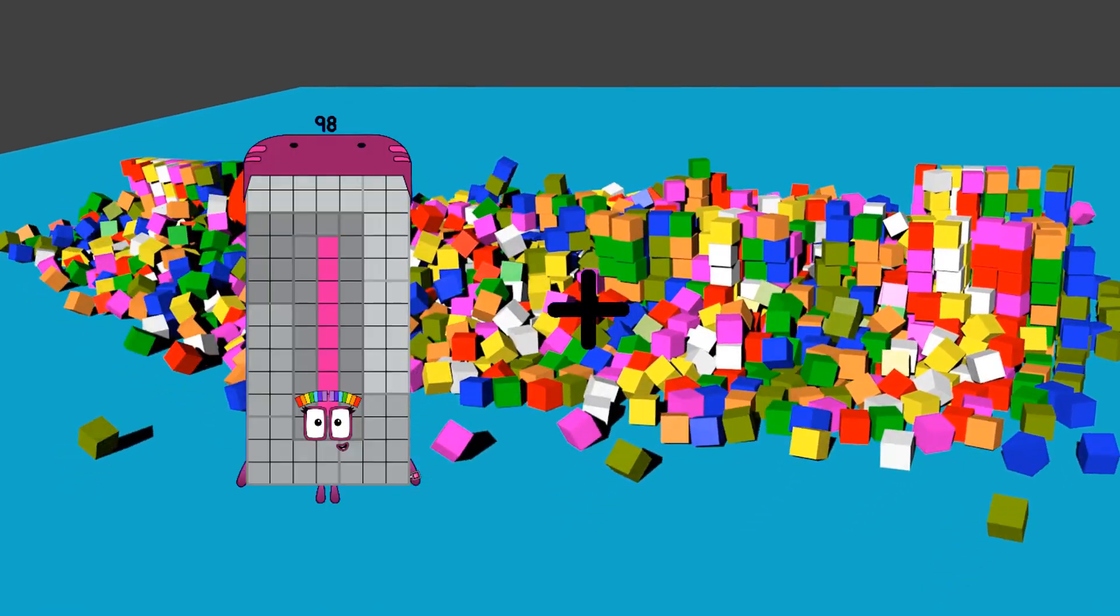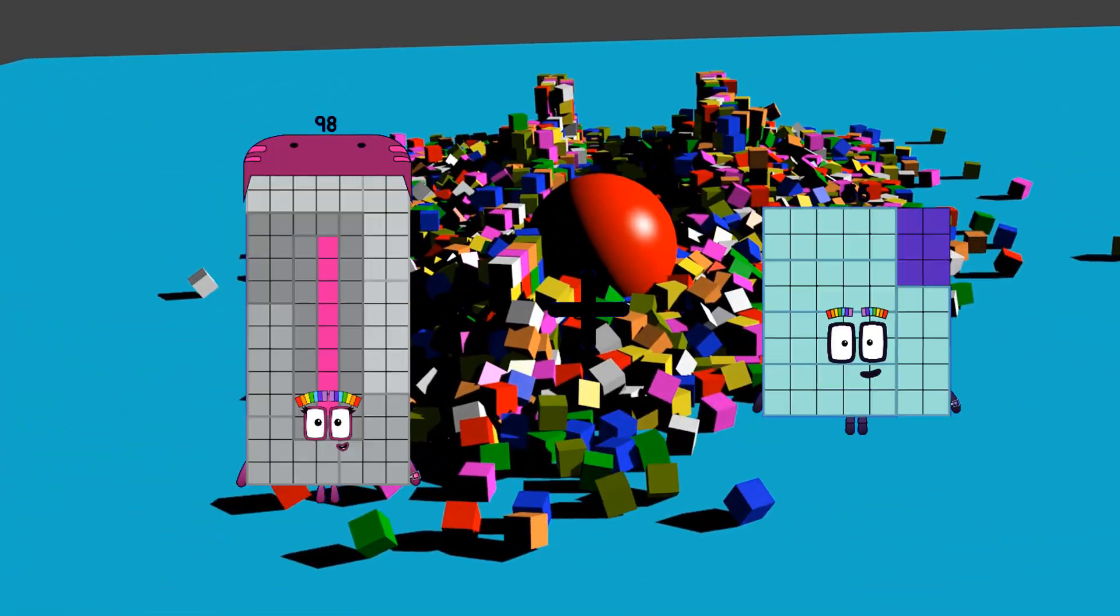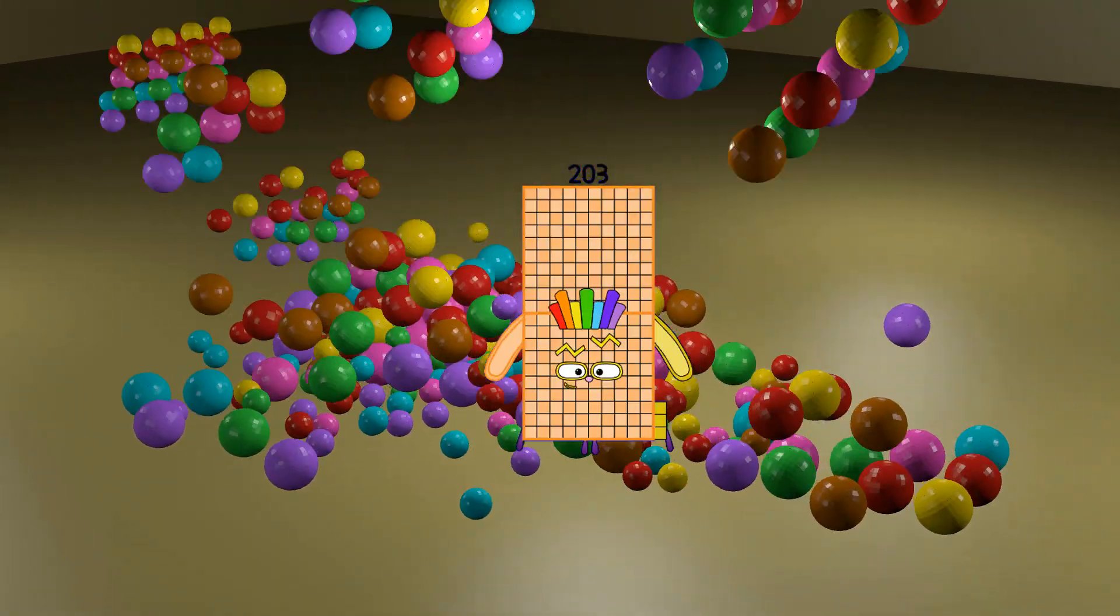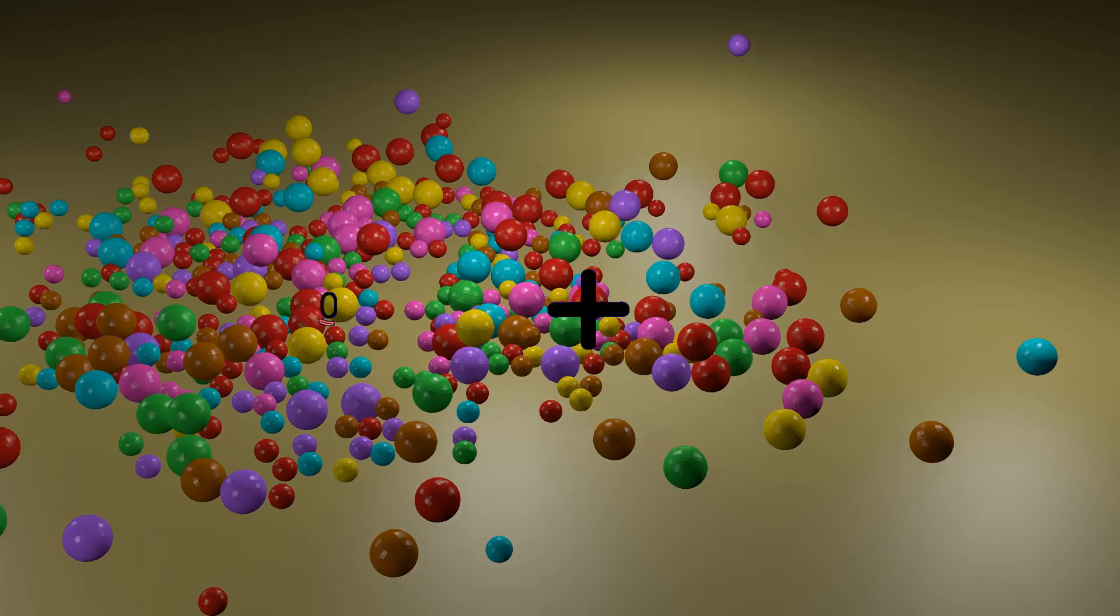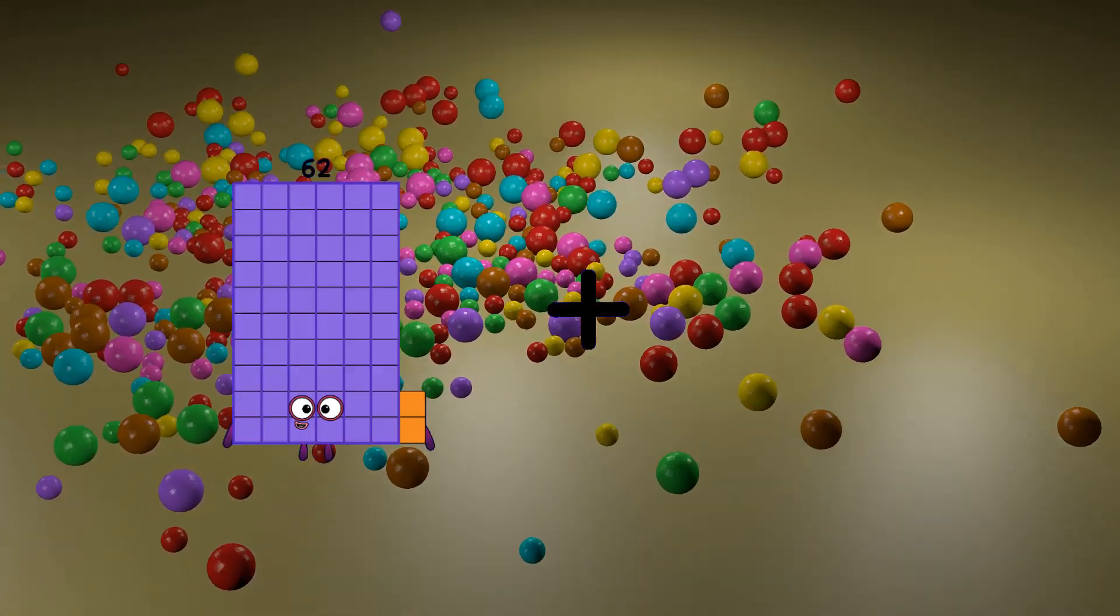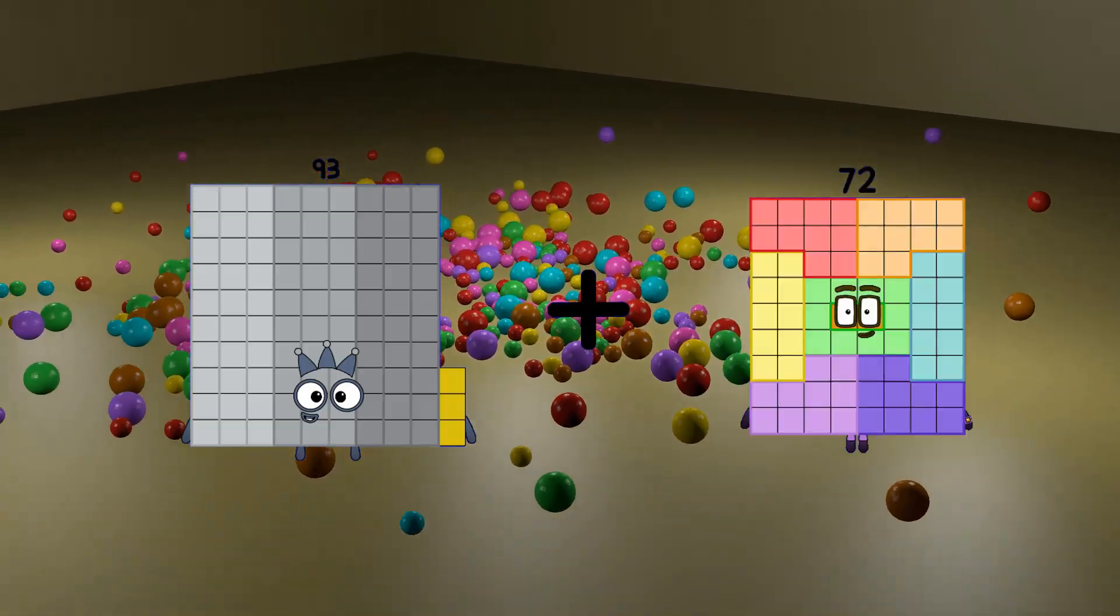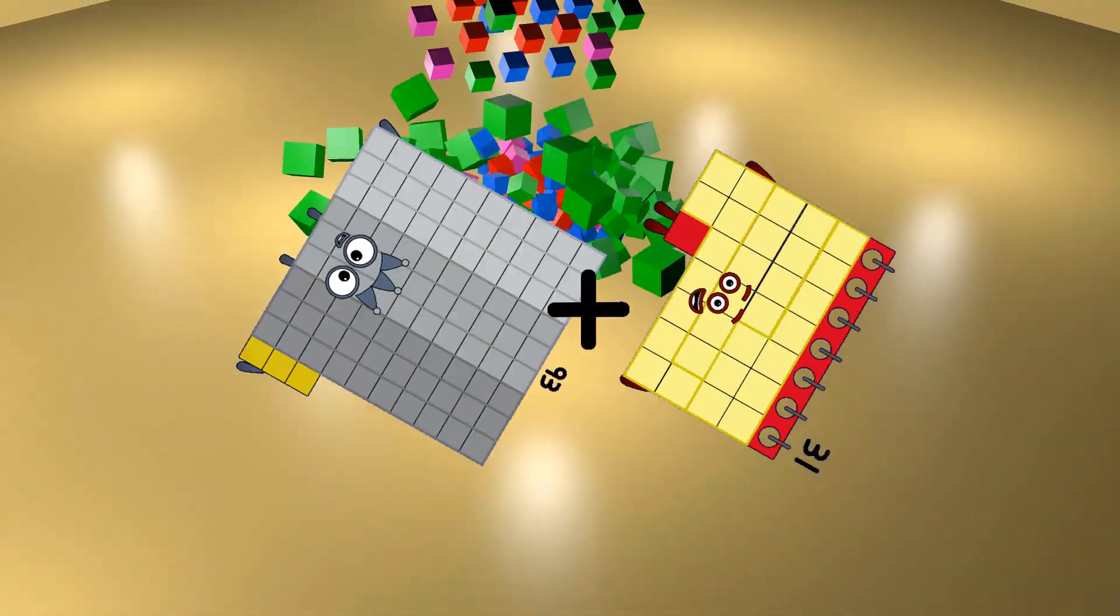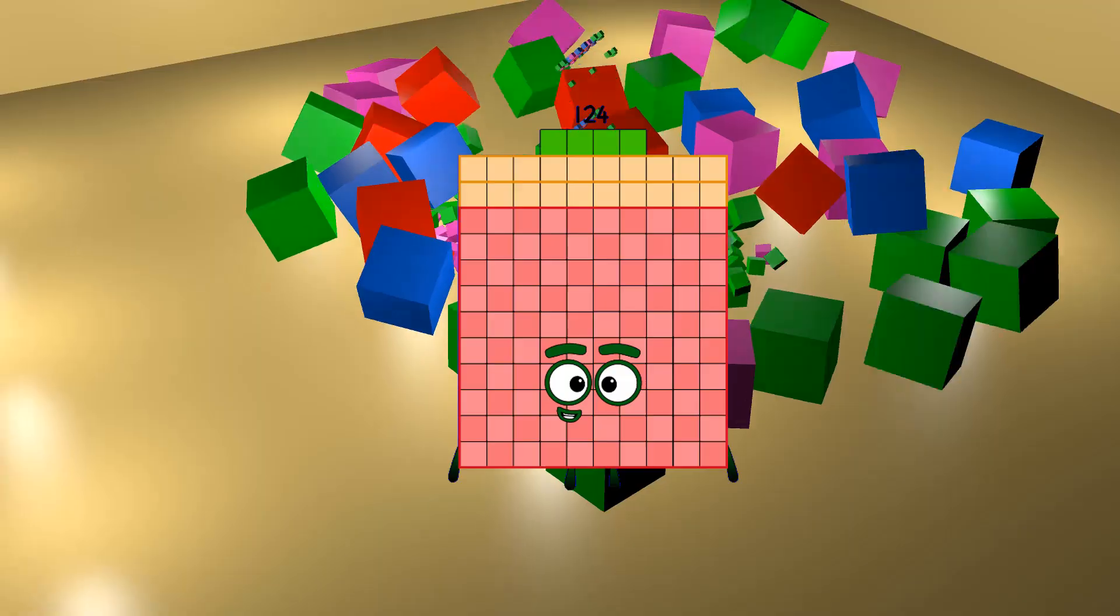98 plus 105 equals 203. 93 plus 31 equals 124.